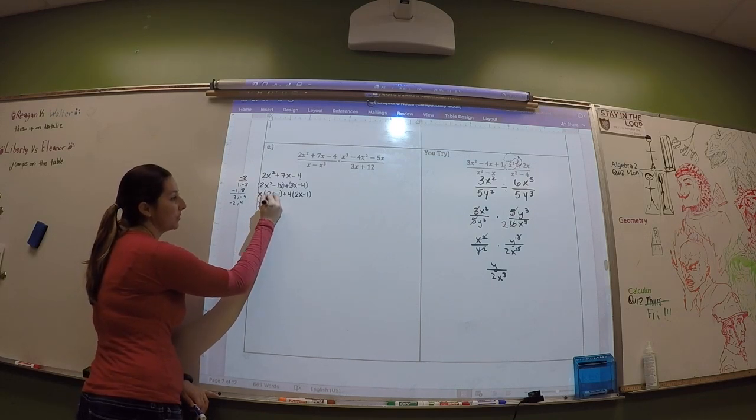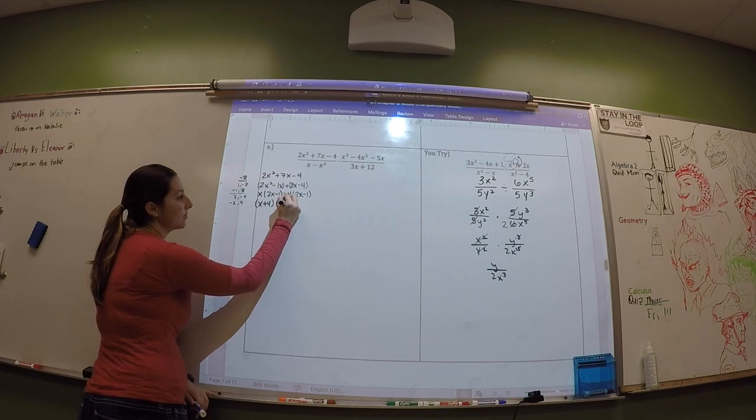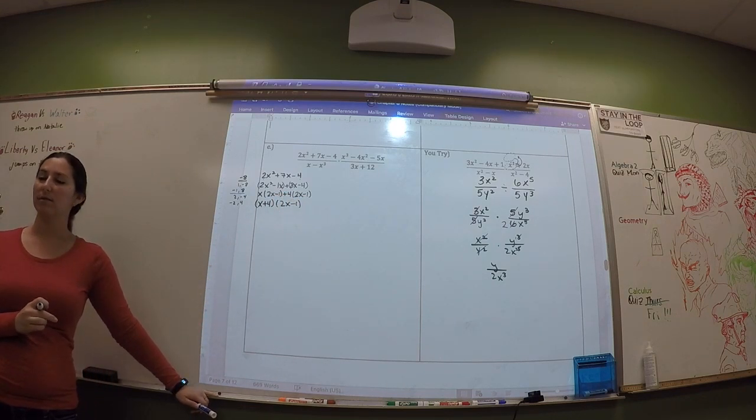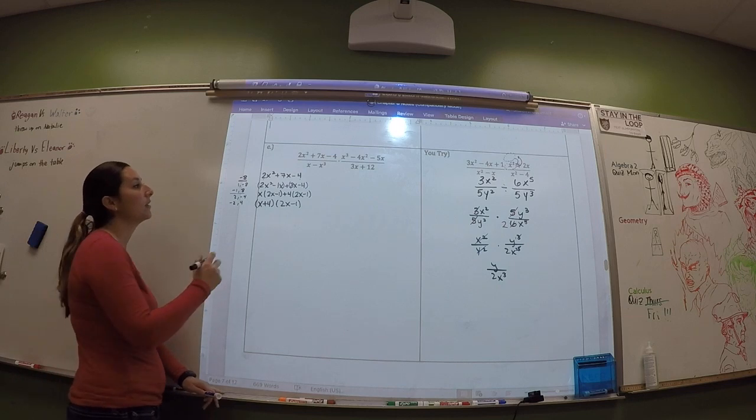And then my two factors are x + 4 and 2x - 1. So if you did it differently and you got those factors, then it's fine. Did you do it differently? You got the same factors? I just got it. Then it's fine. I just skipped some stuff. So, okay.